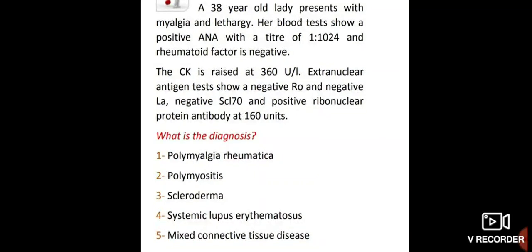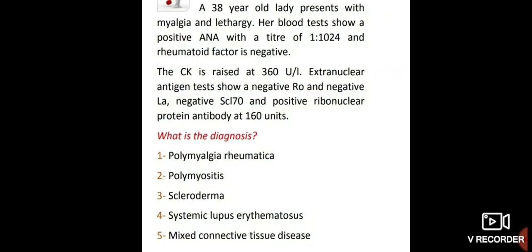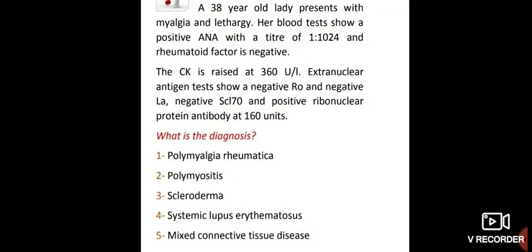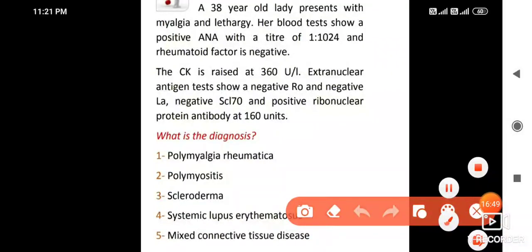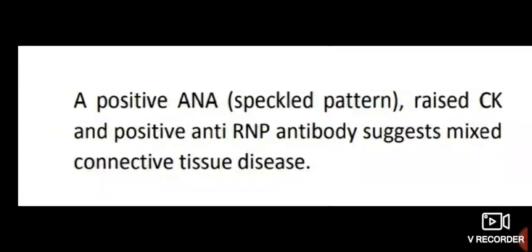A 38-year-old lady presents with myalgia and lethargy. Blood tests show positive ANA with titre 1:1024, rheumatoid factor negative, CK raised. Extranuclear antigen testing shows negative Ro, negative La, negative Scl-70 and positive ribonuclear protein (RNP) antibody at 160 units. The diagnosis is mixed connective tissue disease. A positive ANA speckle pattern, raised CK and positive anti-RNP antibodies suggest mixed connective tissue disease.